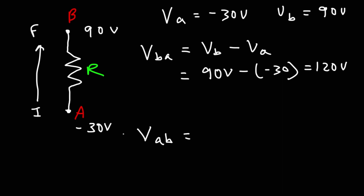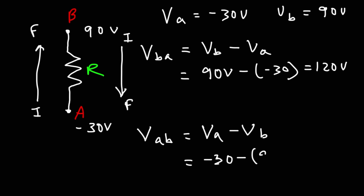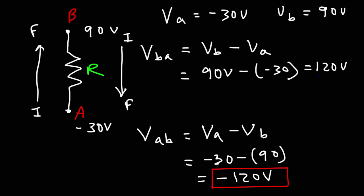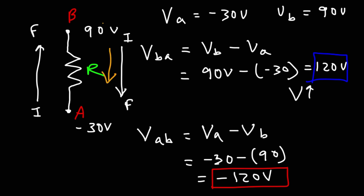Now for V_AB, we're going from B to A, so B becomes the initial and A becomes the final value. VA minus VB is negative 30 minus positive 90, giving us negative 120. Going from A to B, the potential changed from negative 30 to 90 — it increased, so we got a positive value. Going from B to A, we went from high potential to low potential, so the change is negative. Understanding this reasoning helps you write the formulas correctly.